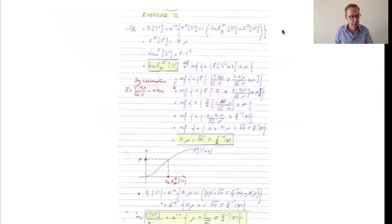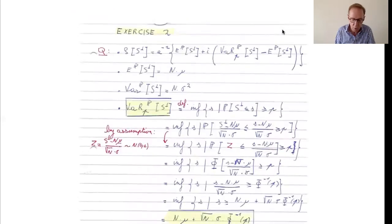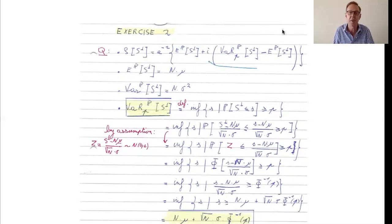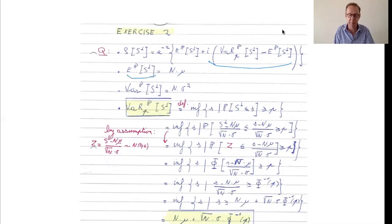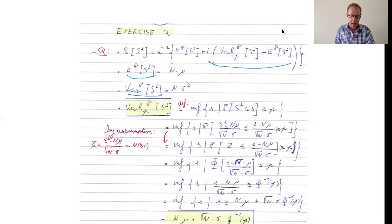Let us look at the solution to that exercise. Rho of S-orthogonal is, by definition, the discounted expectation of S-orthogonal — the best estimate — plus the risk margin based on the cost of capital principle. The expectation of S-orthogonal is N times mu, and the variance of S-orthogonal is N times sigma squared, because we have N independent, identically distributed risks. Now we have to calculate the value at risk at level P of S-orthogonal.